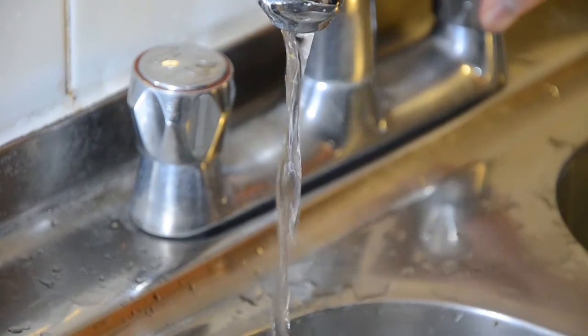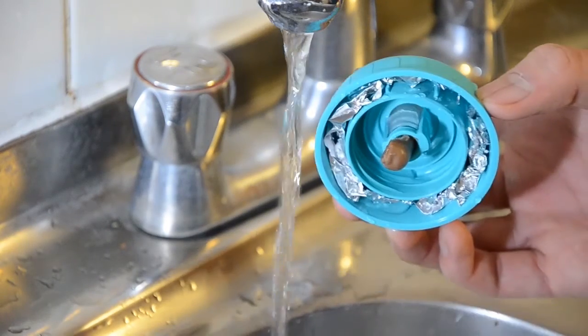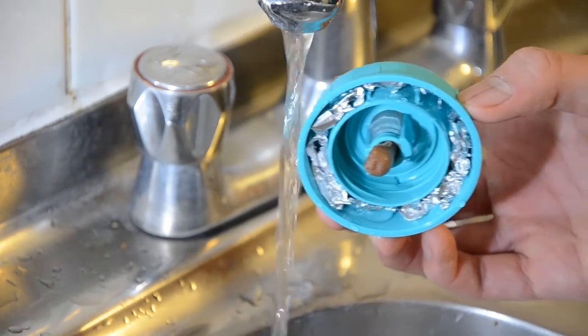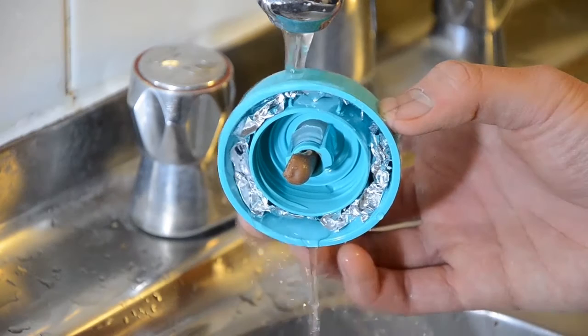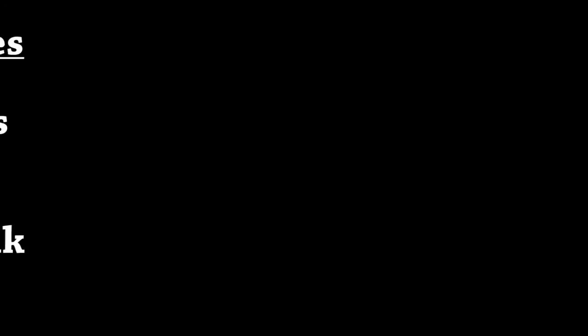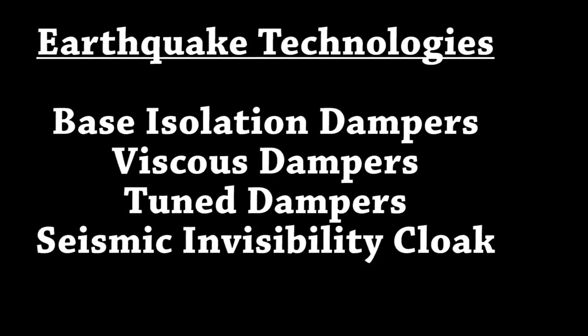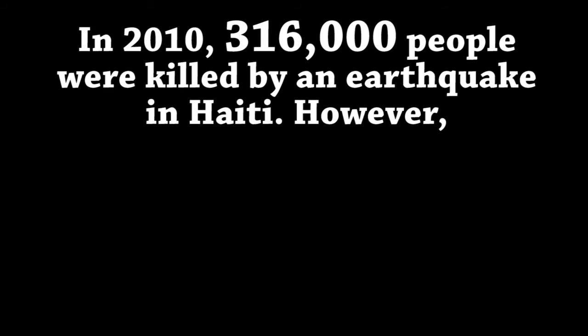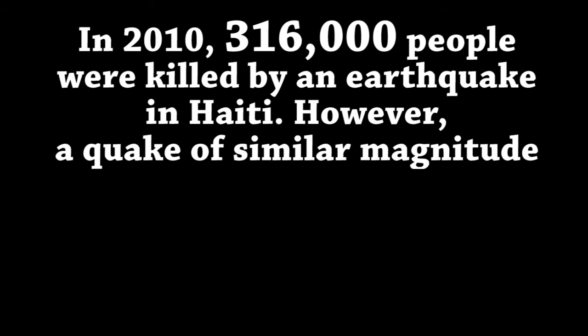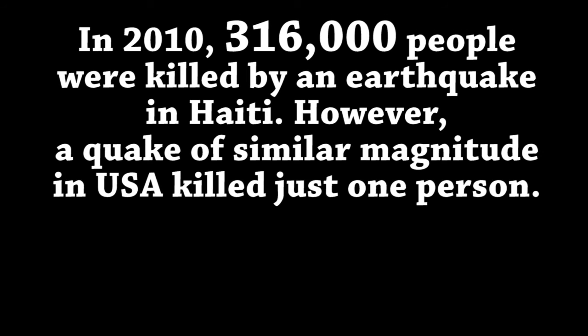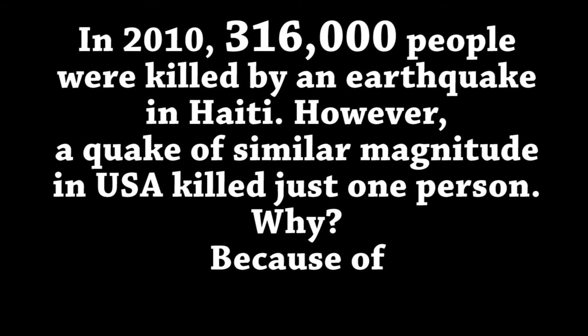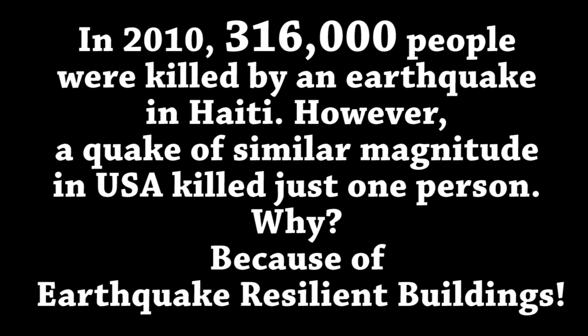A seismic invisibility cloak is a set of plastic rings buried beneath ground that steers the incoming seismic waves around the building foundations. These four are some of the methods that safeguard lives. In 2010, 316,000 people were killed by an earthquake in Haiti. However, a quake of similar magnitude in the USA killed just one person. Why? Because of earthquake-resilient buildings.